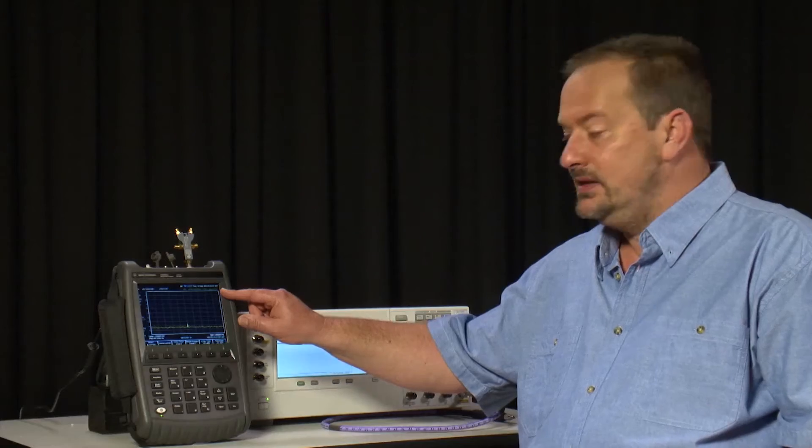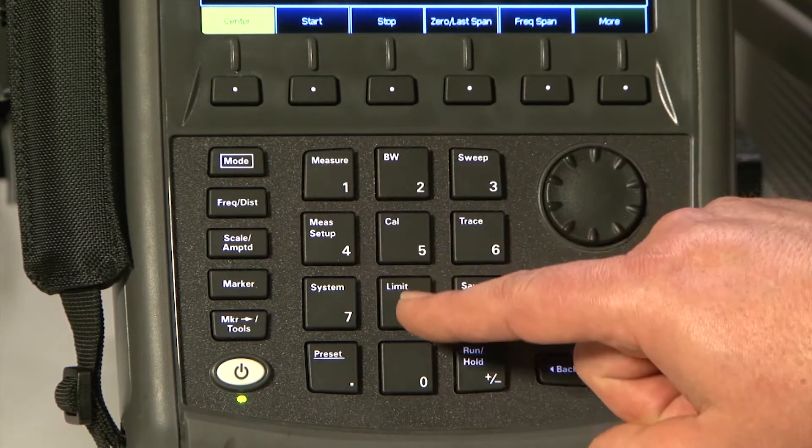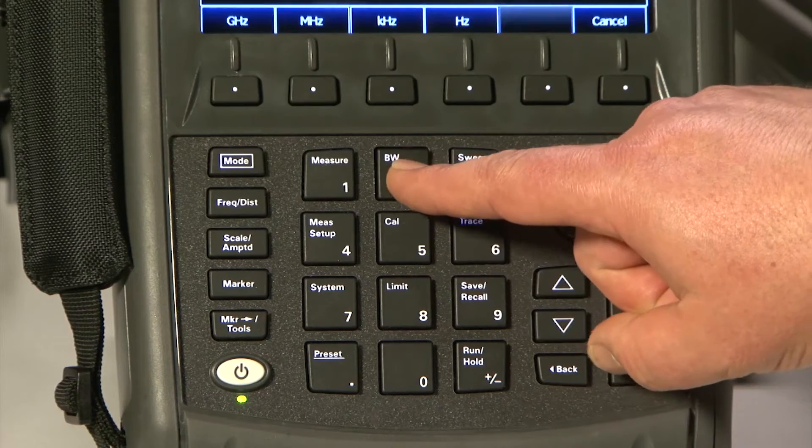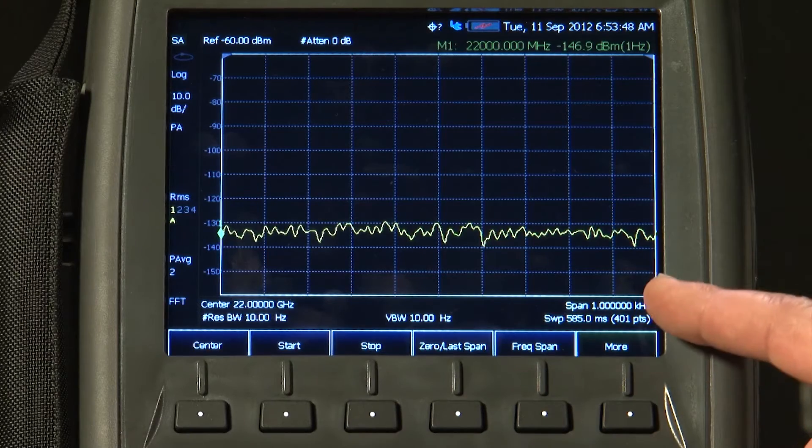Now let us change to a K band frequency. Let us select, for example, a frequency of 22 GHz. And we will just let the averaging settle.